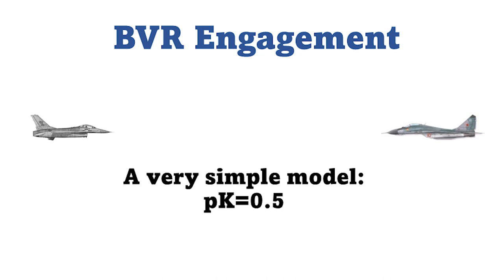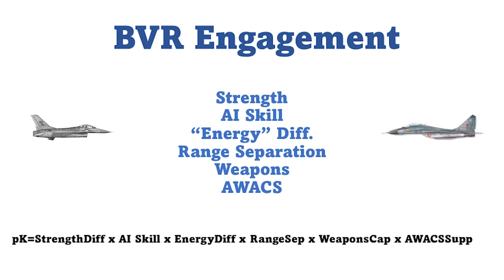This is a very simple model I'm suggesting, but you can make it more detailed. For example, we could give some basic strength value to the F-16 as well as to the MiG-29. We could compare these two strengths, taking into account the pilot's skill flying the AI, speed and altitude, the energy difference, range separation, how far away they are, which BVR weapons are being used. We could give similar numbers for how the weapons operate, whether one side has an AWACS, and so on. This is for sure a very rough model still, but it illustrates what the level of fidelity means.